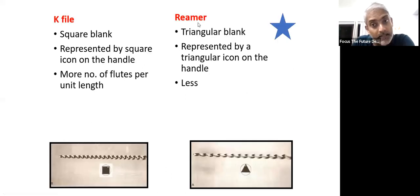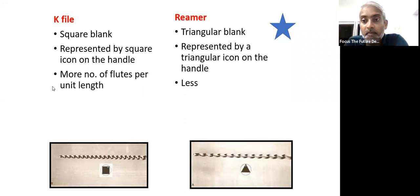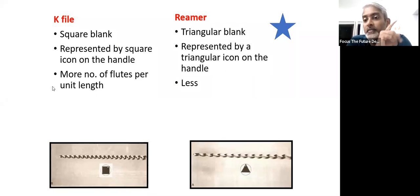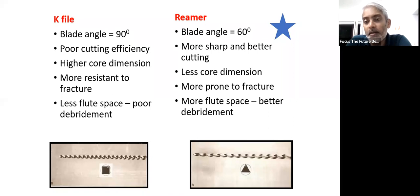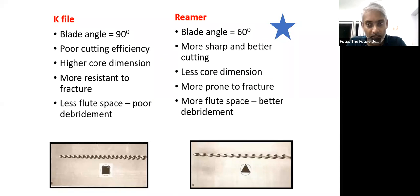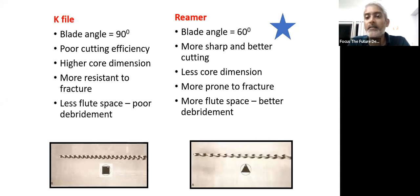One important question regularly and repeatedly asked is the difference between a K-file and a Reamer. K-files are manufactured from a square blank, whereas Reamers are manufactured from a triangular blank. Because they are manufactured from a triangular blank, you have sharp 60-degree edges, which are sharper than your K-file. The cutting efficiency also varies between K-files and Reamers. Because of the sharpness, Reamers definitely have more and better cutting efficiency. There are a lot of things which need to be explained in class because we need more time for this.